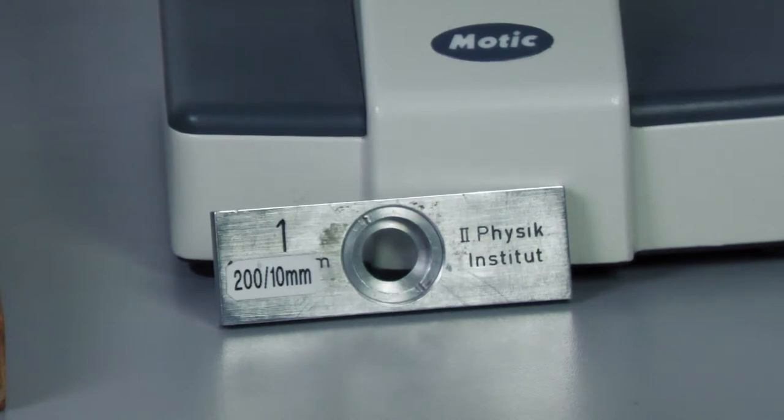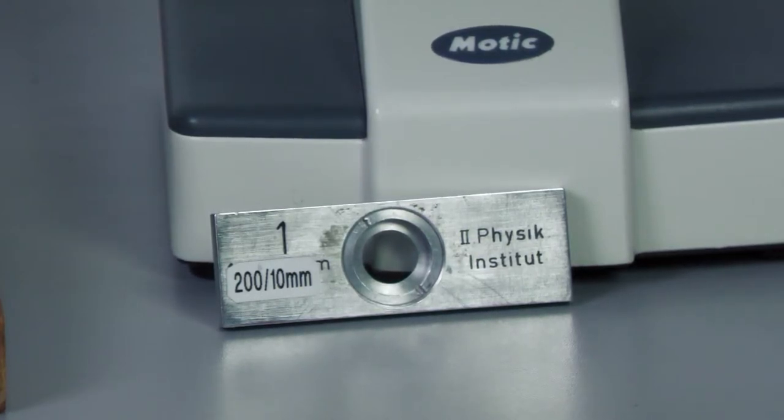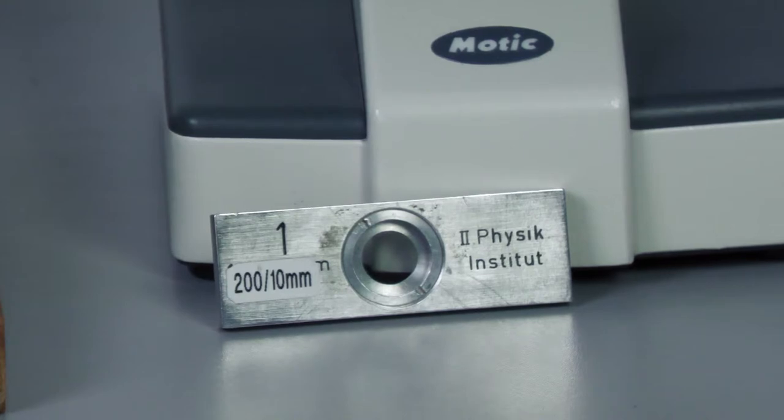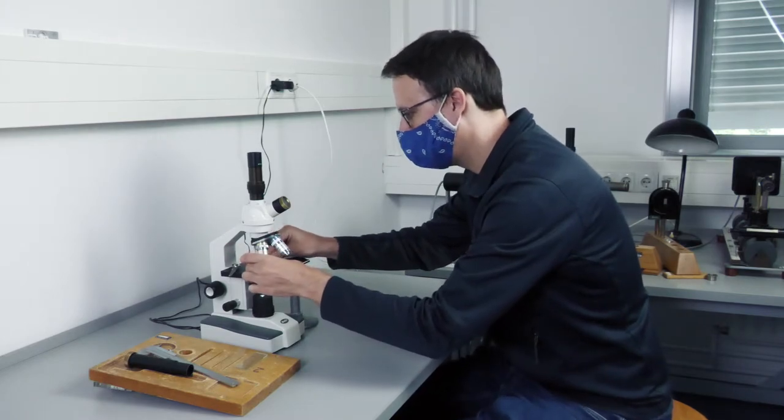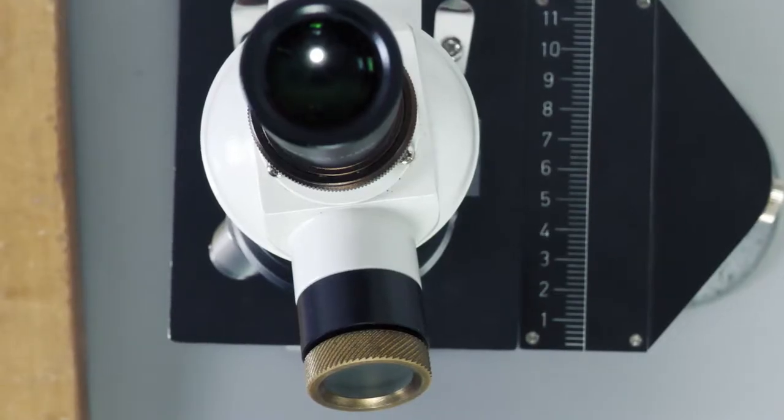The object used in this case is the object micrometer, which is clamped to the object stage. The standard of comparison is placed next to the object table so that both scales are parallel to each other.